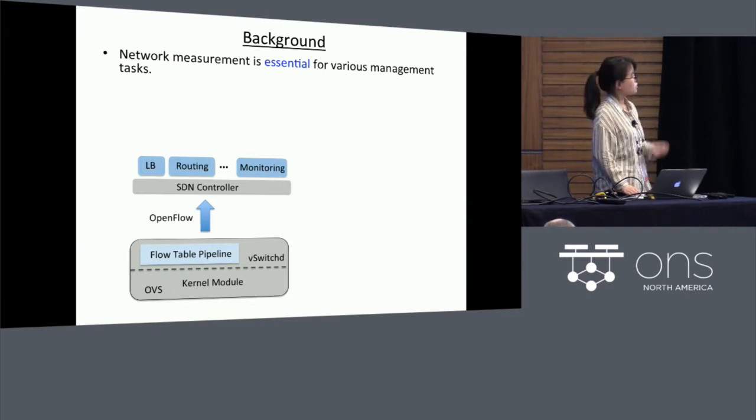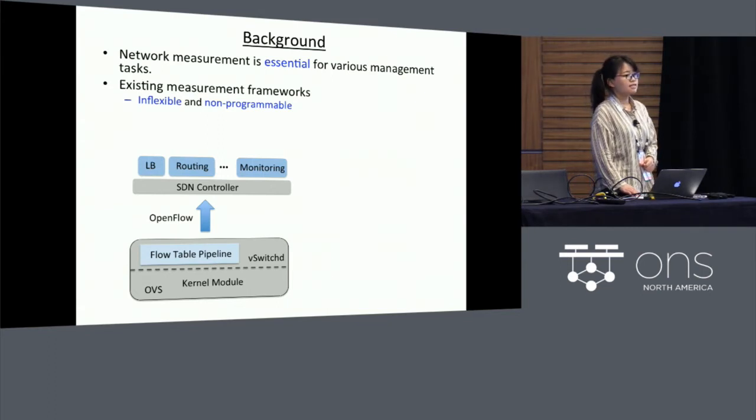Here's the overall architecture of a software-defined network. In order to collect the flow stats information, the monitoring applications running on top of the controllers have to periodically pull the stats from the underlying switches. However, existing solutions built on top of the native OpenVSwitch designs are neither flexible nor programmable. If you look into the structures of the flow table entries on OpenVSwitch, you can find that the forwarding and monitoring functions are tightly bound, which makes it inflexible to meet the dynamic monitoring needs of different applications.